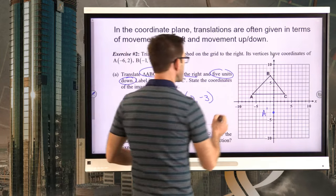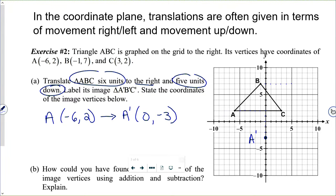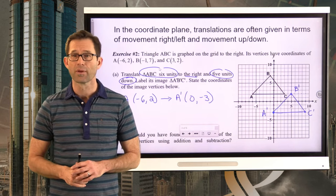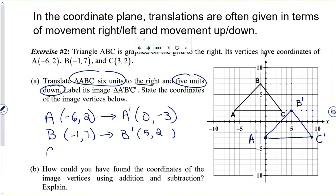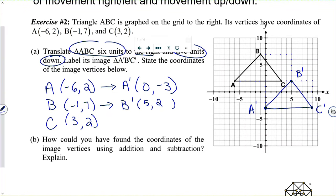For B: six right, five down — there's B prime. For C: six right, five down — there's C prime. Connect them to form the full triangle. The mapping: B at (−1, 7) goes to B prime at (5, 2). C at (3, 2) gets mapped to C prime at (9, −3). All we did was take the triangle and shift it six units to the right and five units down — and notice this triangle and that triangle are congruent, since translations are a rigid motion.